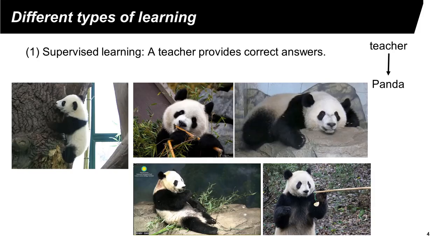There are different types of learning. A widely used type is called supervised learning. This is the situation when there is a teacher telling the learner what things are. Suppose a teacher shows several images of a panda and tells students these are images of a panda. The learner looks at these images and tries to find the commonalities — the pandas seem to have black eyes, black ears, black limbs, and a white face.